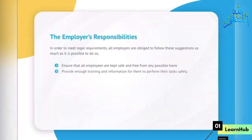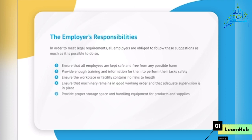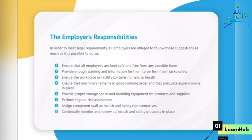The Employer's Responsibilities. In order to meet legal requirements, all employers are obliged to follow these guidelines as much as it is possible to do so: ensure that all employees are kept safe and free from any possible harm; provide enough training and information for them to perform their tasks safely; ensure the workplace or facility contains no risks to health; ensure that machinery remains in good working order and that adequate supervision is in place; provide proper storage space and handling equipment for products and supplies; perform regular risk assessments; assign competent staff as health and safety representatives; and continually monitor and review all health and safety protocols in place.